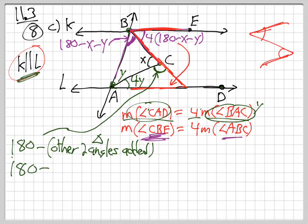So it's got to be, this other angle here, has got to be 180 minus the other two angles added. What are the other two angles added? Well, they are 4Y, add this one, right? That's the other one here, 4 times 180 minus X minus Y.